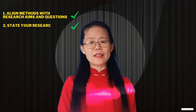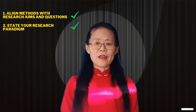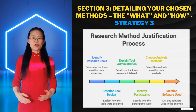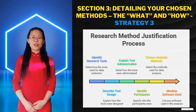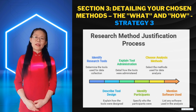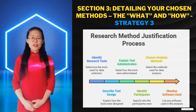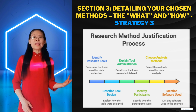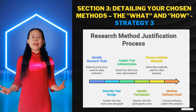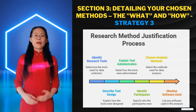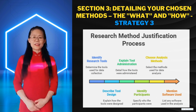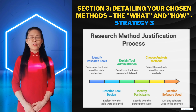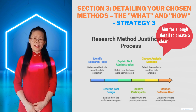Once you've set that foundation, it's time to get specific about what you did — the third strategy. What you did and how you did it. This detail is your chance to be extremely clear so that someone else can replicate your study. In terms of data collection: what tools — surveys, interviews, experiments — did you use? How were they designed and administered? Who were your participants? In terms of data analysis, be specific: did you use thematic analysis, content analysis, t-tests, regression, and so on? Mention any software you used. Aim for enough detail to create a clear audit trail.